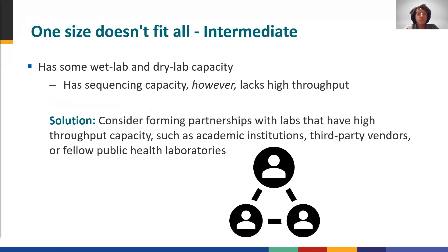An intermediate lab occasionally uses sequencing for outbreak and surveillance activities, and probably has more wet lab capacity than dry lab capacity. About half of U.S. state laboratories describe themselves as intermediate. They can perform sequencing and primary bioinformatics analyses; however, they lack capacity for high-throughput processes and struggle to handle large increases in sequencing demand. Some intermediate labs have addressed this by forming partnerships with labs that have high-throughput capacity.